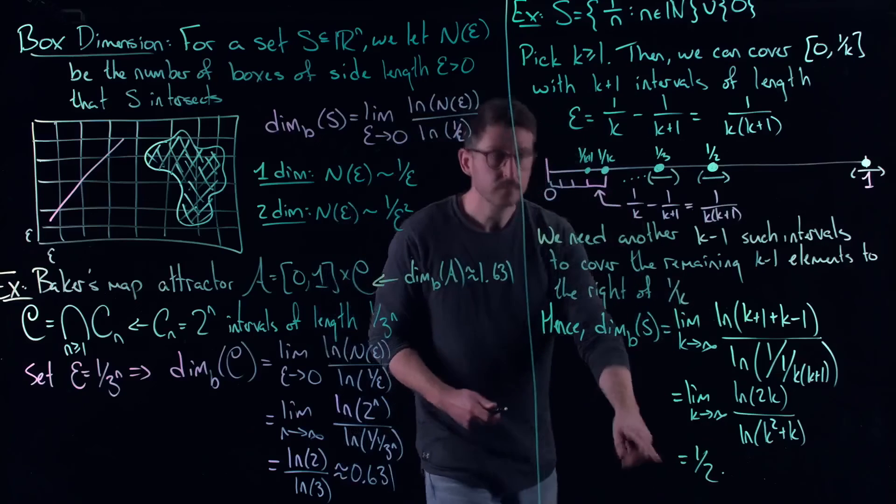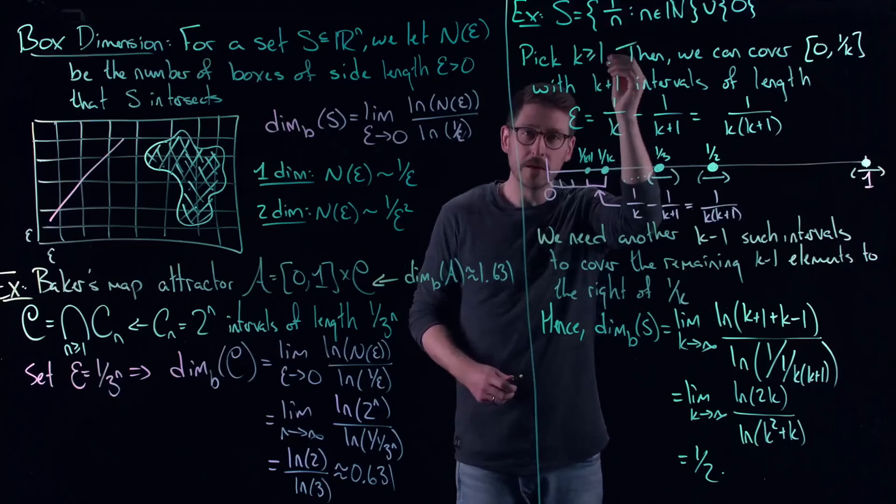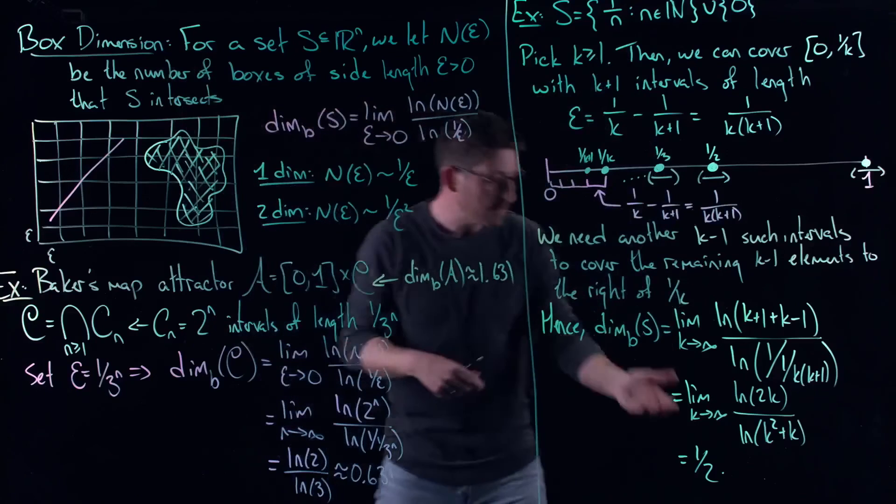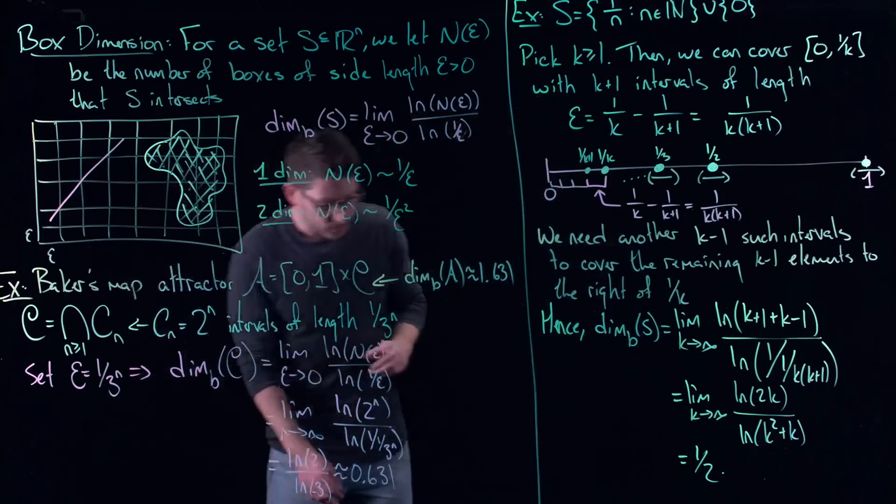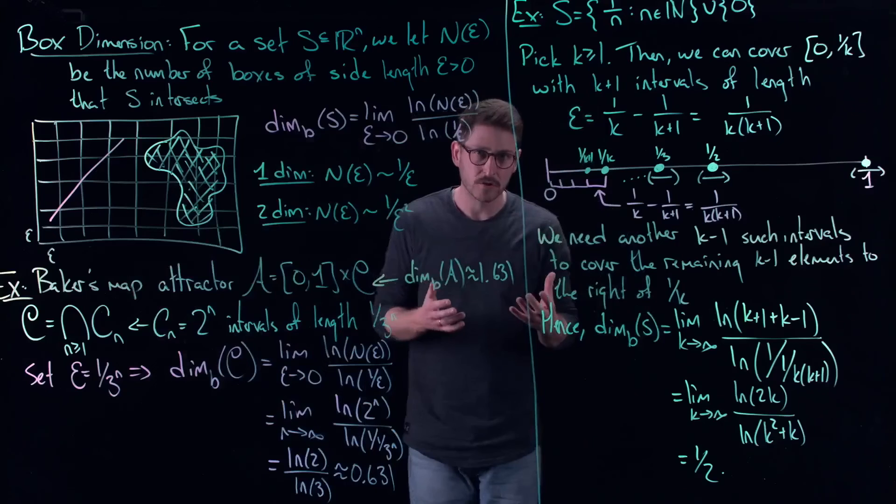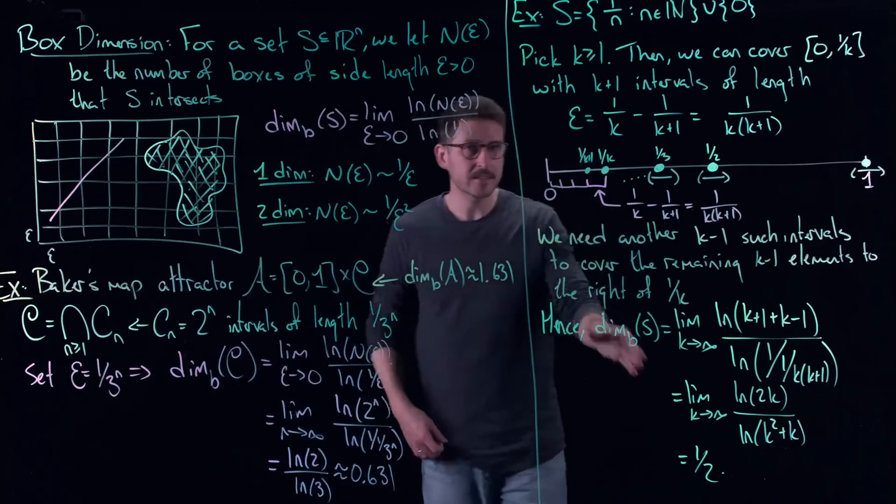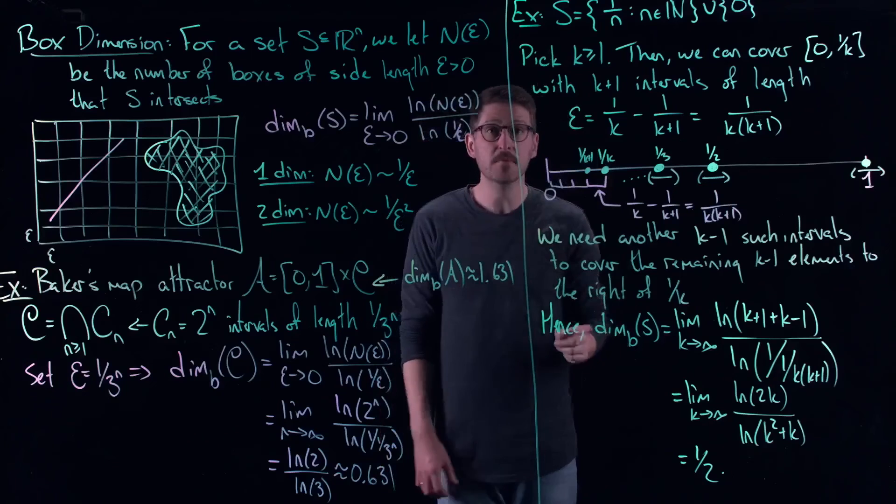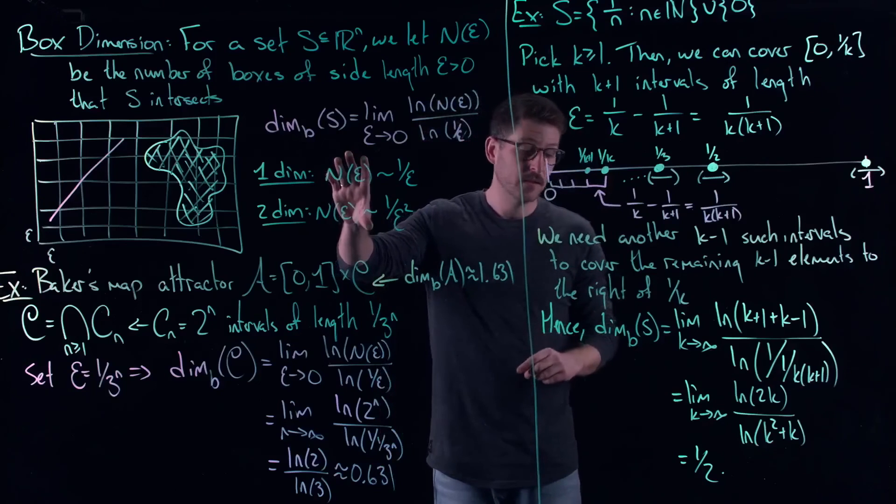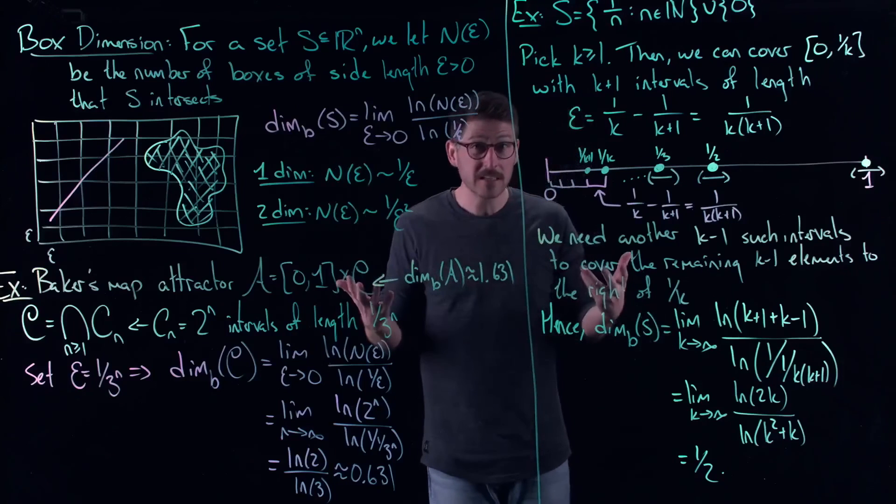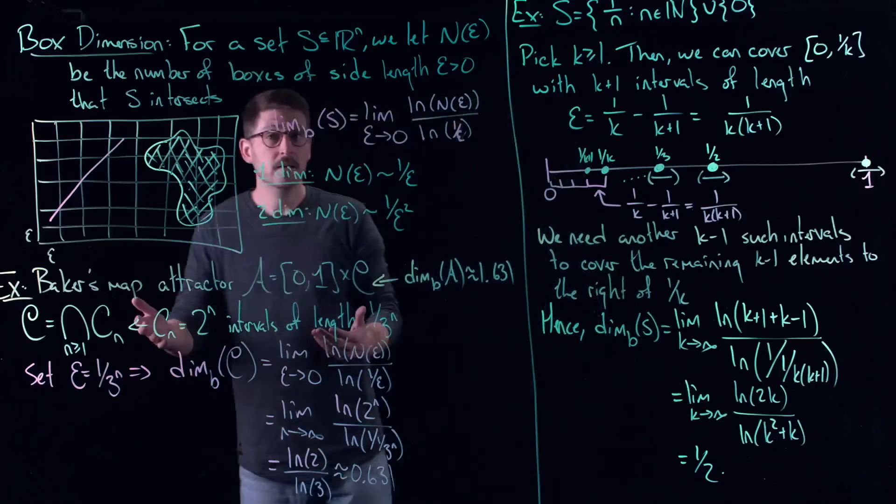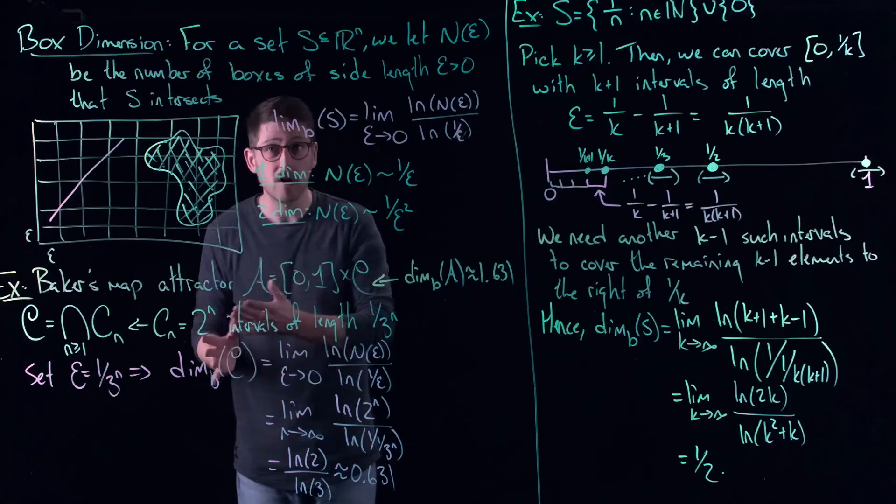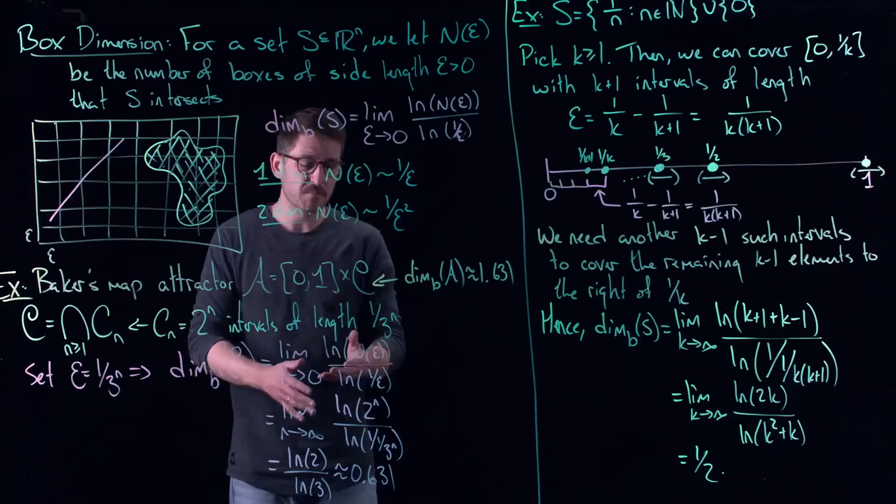But what does that mean? This discrete collection of points has a dimension in this weird way of thinking about things. And actually, its dimension is a half. Now, one thing that people do sometimes is they confuse dimension and like a measure or the length of something. This is not saying that a half of the points between 0 and 1 belong to S. This is a very abstract way of generalizing the dimension of something. And in this case, the number that gets spit out is one half. In the same way that my Cantor set, which was uncountable, perfect, totally disconnected, closed, bounded, all kinds of these important properties, this thing has a dimension of 0.631.